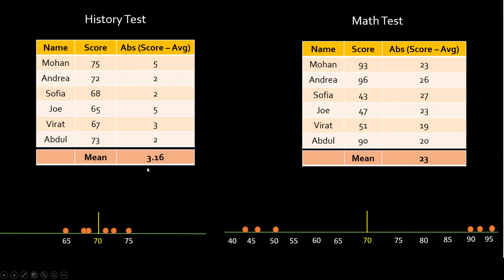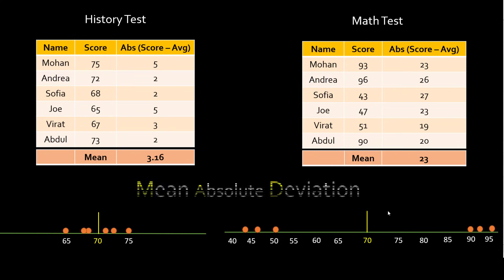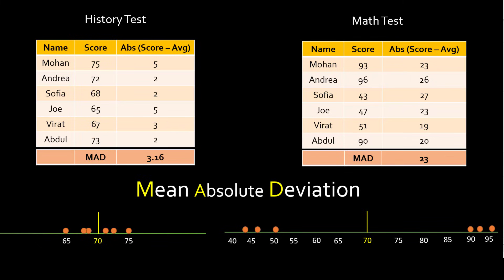This is interesting — for the history test the mean is 3.16, but for the mathematics test the mean is 23, which means this data set is more widely spread out with respect to the average. This mean number is nothing but the mean absolute deviation — you can also call it MAD. MAD can be a quite significant and useful metric that represents how spread your data points are, but there could be a scenario where using mean absolute deviation might not be enough.